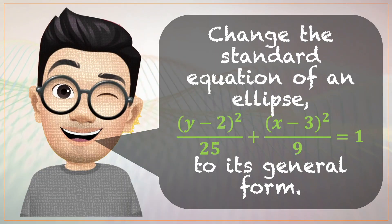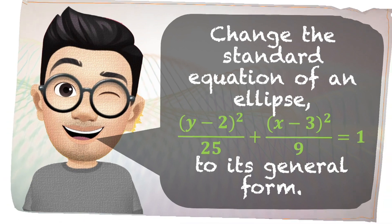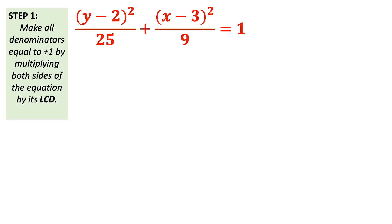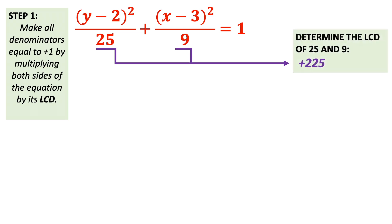Let's bring back the standard equation of a vertical ellipse denoted by (y minus 2) squared all over 25 plus (x minus 3) squared all over 9 equals 1, and convert it to its general form. To express this standard equation to its general form, we multiply both sides of the equation by the LCD of the two denominators 25 and 9. The LCD of 25 and 9 is 225.